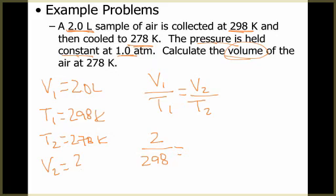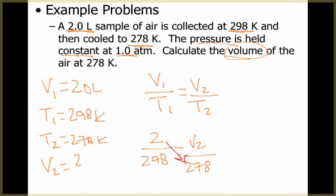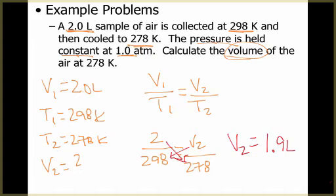V2 is what I'm solving for, and T2 is 278 K — also in Kelvin, so no conversion needed. We're going to cross-multiply: multiply V1 by T2 and divide by T1 to solve for V2. V2 ends up being 1.9 liters. Not a big difference, but a little bit of a difference between those two temperatures.